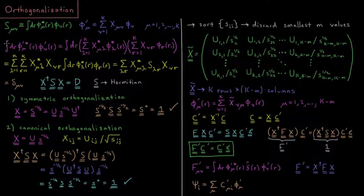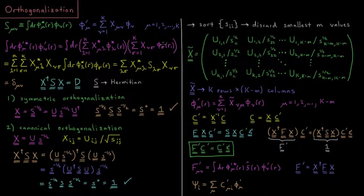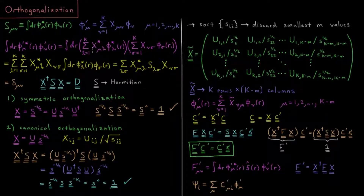If we take the overlap matrix element of two transformed orbitals, the result is going to come from two transformations — one in the complex conjugate and one in the basis function itself. Here we have the index going over what I call lambda, and here going over sigma. In this case, we can factor out that double sum and factor out these constants x*_mu_lambda and x_nu_sigma.